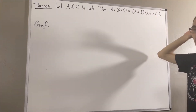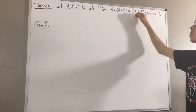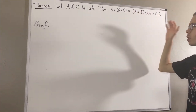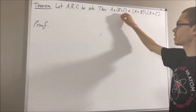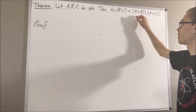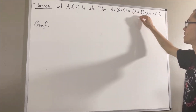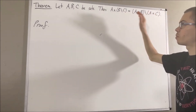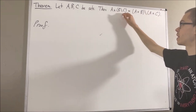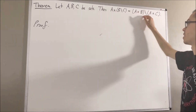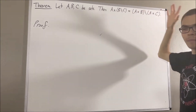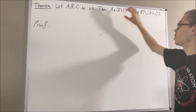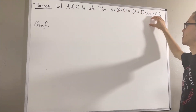We're trying to prove that two sets are equal. So what we're going to do is prove that this set is a subset of this set, and then prove this set is a subset of this set. Let's start by proving this set is a subset of this set — that means we're going to prove that every element of this set belongs to this set.